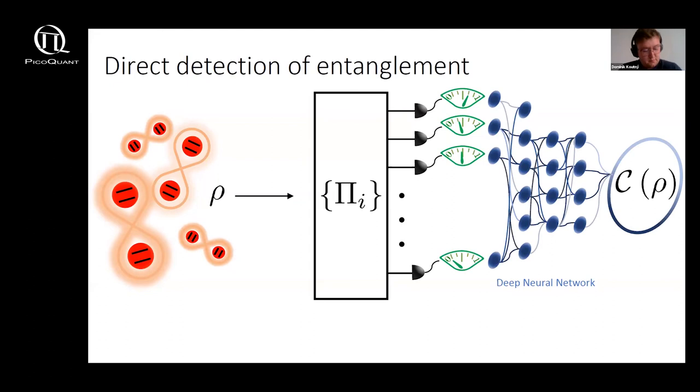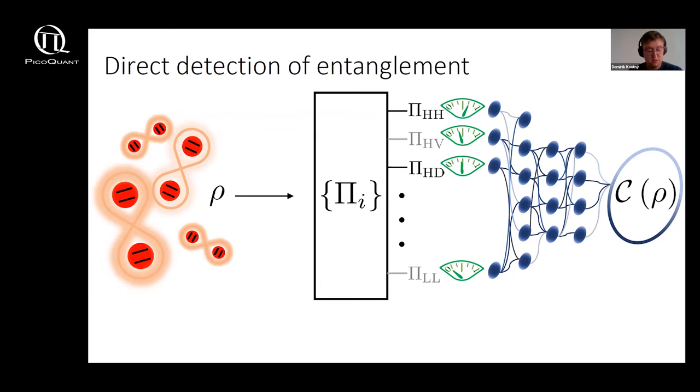So instead of characterizing the source first we built a deep neural network which is essentially a trainable multi-layer highly non-linear transformation that learns to predict, in our case, the concurrence of the source from the given set of probabilities.